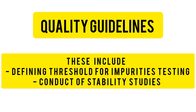The Quality guidelines include the threshold for impurities testing — the limits for impurities — and the conduct of stability studies covering the quality of raw materials and finished products. This includes stability testing and photostability testing of drug products, such as Q1A, which has around 14 subdivisions that will be discussed in coming videos.